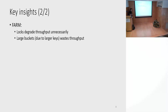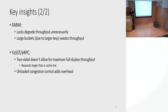The second set of insights has to do with software frameworks. Looking at FaRM, if we share connections using locks this will degrade throughput, as the authors also report in their paper. A second issue is that if key-value pairs are larger than initially assumed, we end up with much larger buckets, wasting throughput because we transfer the entire bucket or neighborhood of buckets and do the lookup at the source node. For eRPC and FAST, using RPCs means two-sided communication, which does not allow the maximum full-duplex throughput that one-sided reads and writes provide — especially for requests larger than a cache line.